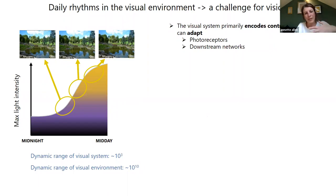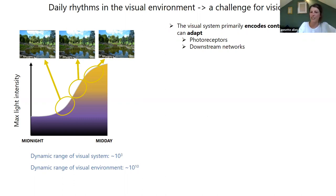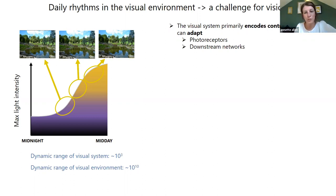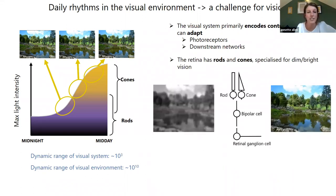Of course this doesn't happen, and one reason is that the visual system encodes contrast — the relative change in intensity. On top of that it's able to adapt, so there's some sensitivity normalisation throughout the visual system starting with the photoreceptors, which can adjust the sensitivity range of visual neurons to match that of the prevailing light environment. Even though this process could in theory do the job with really good adaptation, most mammalian retinas use another tool: the evolution of two different types of photoreceptors, the rods and the cones.